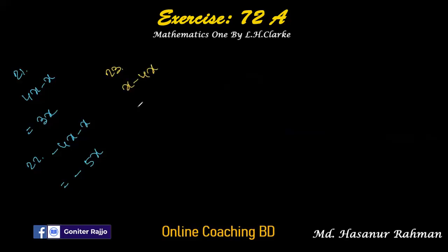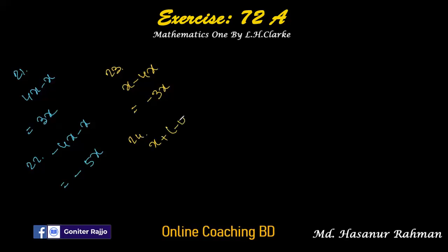Number twenty-three: x minus 4x should be minus 3x, because the symbol of x is plus and the symbol of 4x is minus — both signs are different so we subtract. The sign of the larger number is negative, so we give a negative sign. Number twenty-four: x plus minus 4x becomes x minus 4x, which is also minus 3x. Problems 23 and 24 are the same.